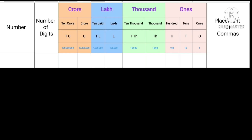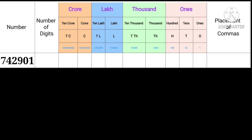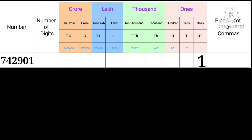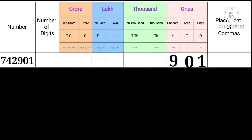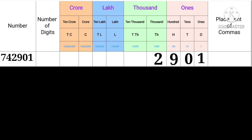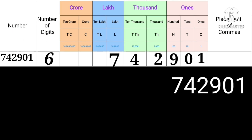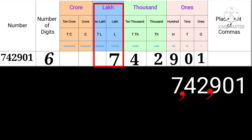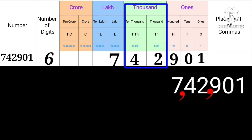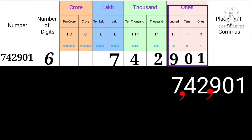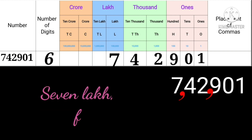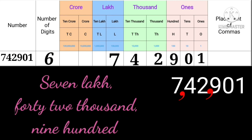Now we will solve a question. A place value chart is given. The number is 7, 4, 2, 9, 0, 1. Put one in ones place, zero in tens place, nine in hundreds place, two in thousands place, four in ten thousands place, and seven in lakh place. On counting the digits, we get six digits, so write six in the number of digits column. Now placing commas: count one, two, three — place a comma. Again count one and two — place a comma. Seven is in lakh's place, so seven lakh. Forty-two is in thousands place. Together it reads: seven lakh, forty-two thousand, nine hundred and one.